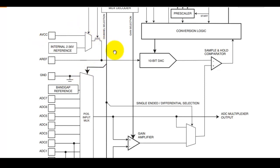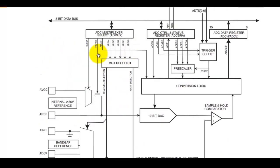There are 3 options for selecting the analog reference for the ADC: the analog VCC, the internal 2.56 volt reference, and an external analog reference. These references can be selected using the Reference Selection 1 and Reference Selection 0 bits of the ADC Multiplexer Select register.